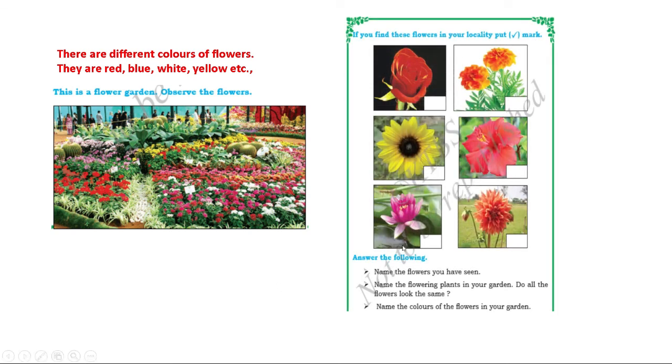Here there is a work like, whichever flowers you have seen in your locality you can tick mark, like here some of the flowers like lotus, rose, sunflower, orchid, hibiscus. These are the flower names you can remember. Lotus, rose, sunflower, orchid, hibiscus.